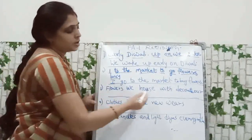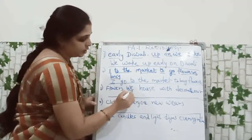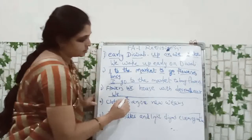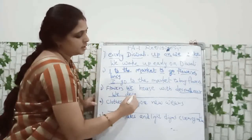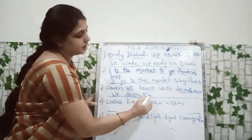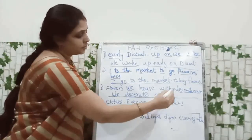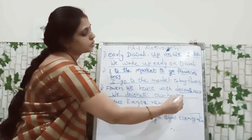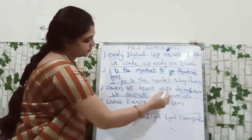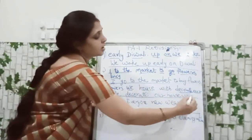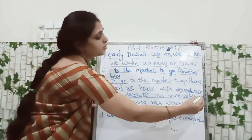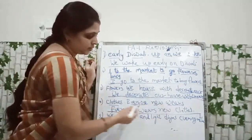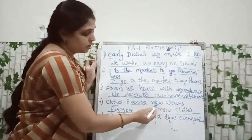Next: 'Flowers we house with decorate' — We decorate our house with flowers. D-E-C-O-R-A-T-E, decorate. O-U-R, our. H-O-U-S-E, house. W-I-T-H, with. F-L-O-W-E-R-S, flowers. Next: 'Clothes everyone new ways' — Everyone wears new clothes.